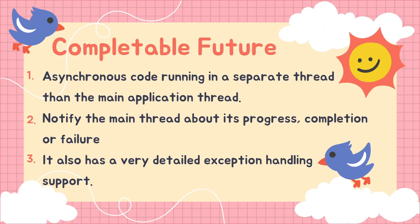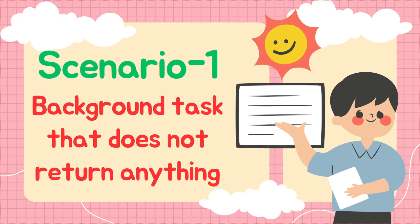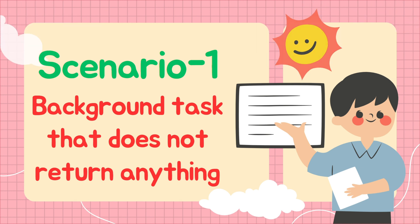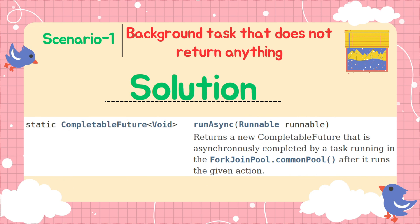We may not cover all the methods available in CompletableFuture because the list is huge — we will try to cover the important and most used functionalities. For the first scenario, suppose we want to run some background task asynchronously and that task does not return anything. In that case we can use runAsync(), which is a static method in the CompletableFuture class. This method takes a Runnable object as a parameter, returns CompletableFuture of type Void, and uses a thread from the global common pool.